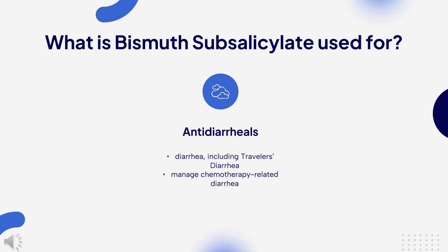Bismuth subsalicylate is a component of helidac therapy — bismuth subsalicylate, metronidazole, and tetracycline — which is a treatment regimen indicated for the eradication of H. pylori for treatment of patients with H. pylori infection and duodenal ulcer disease.